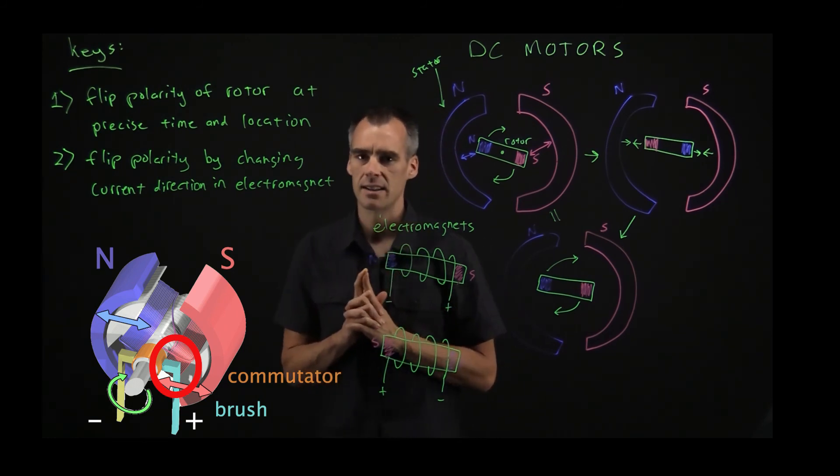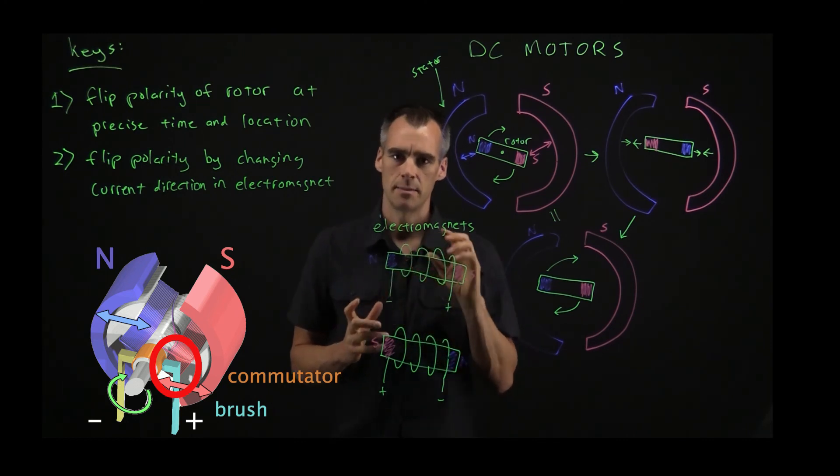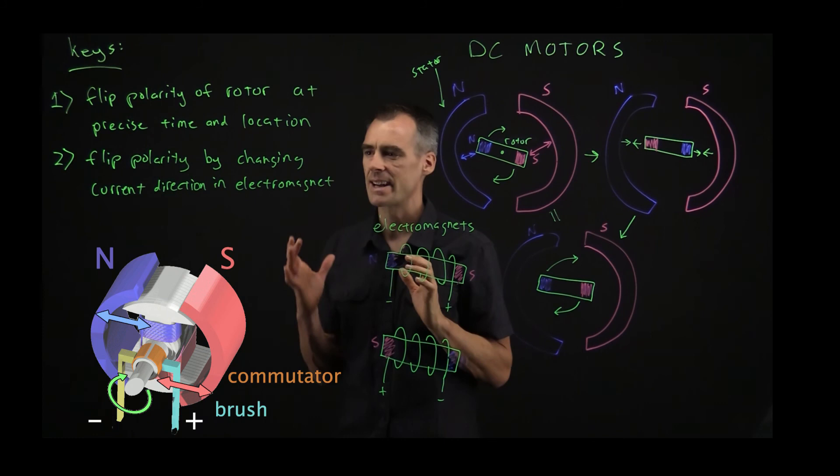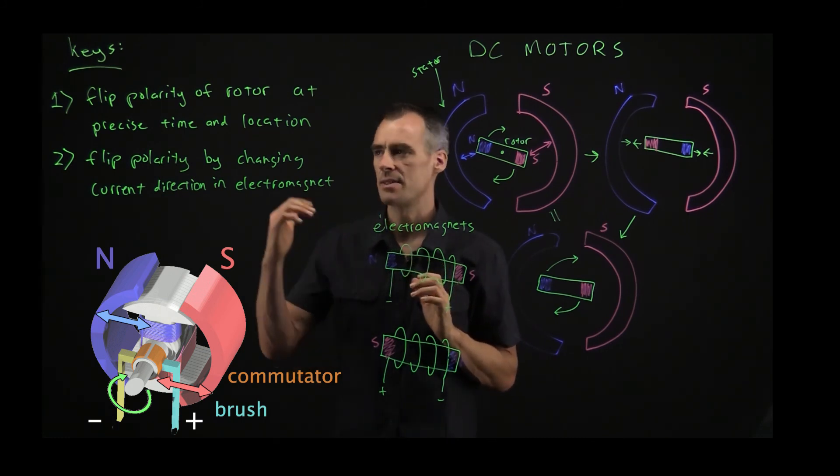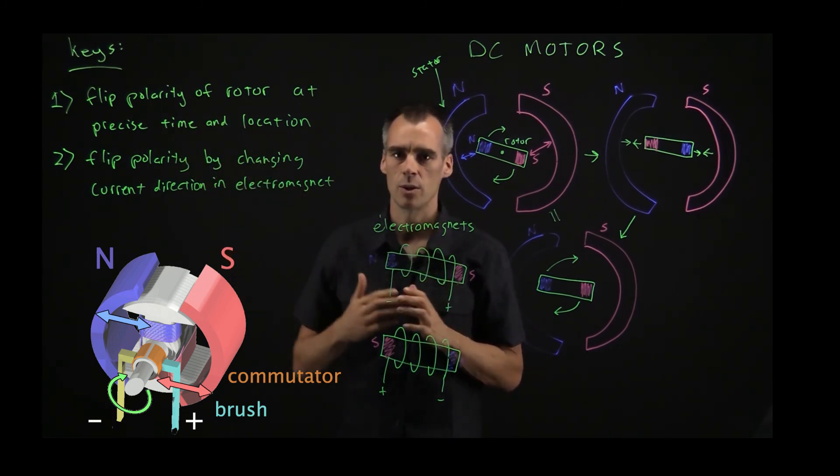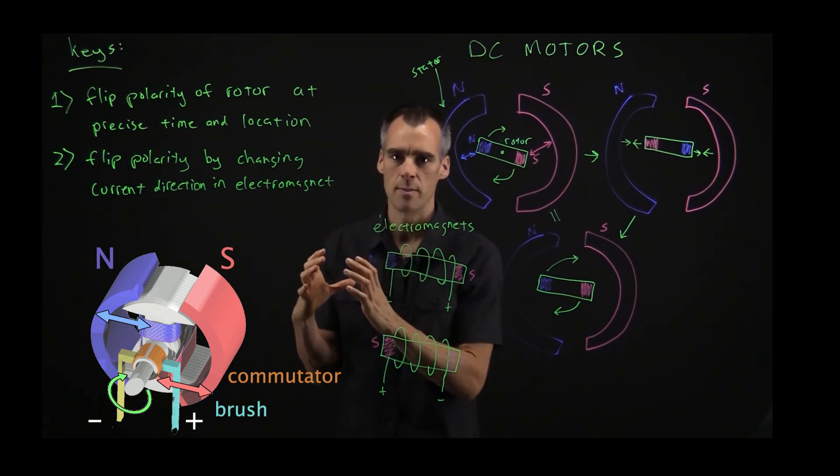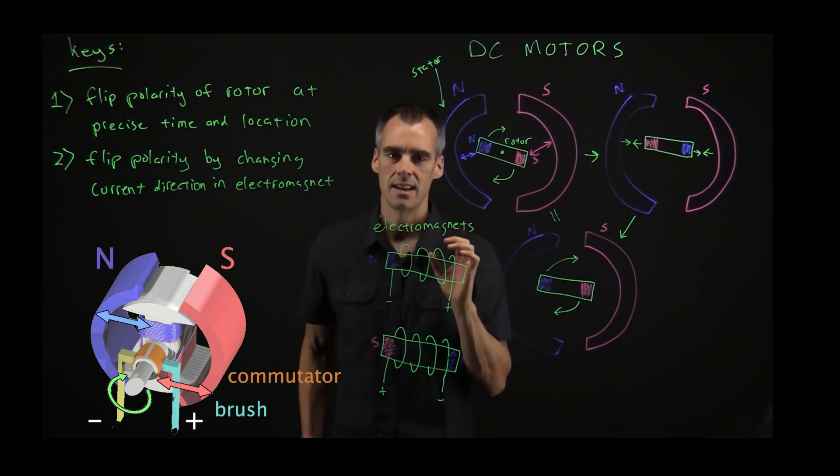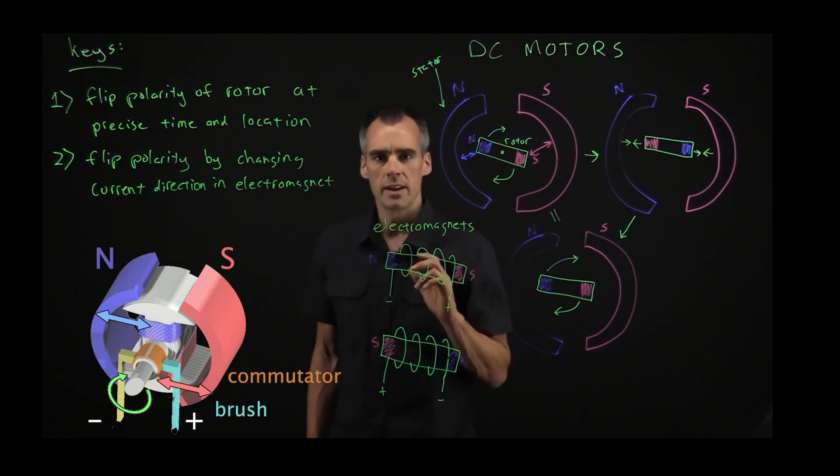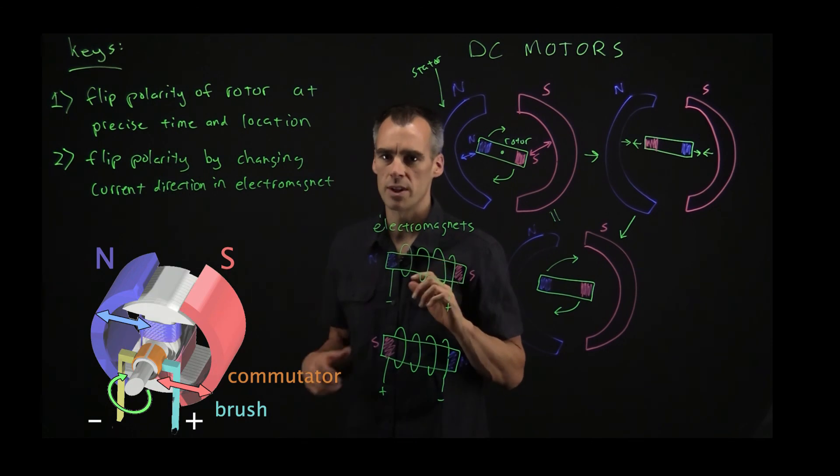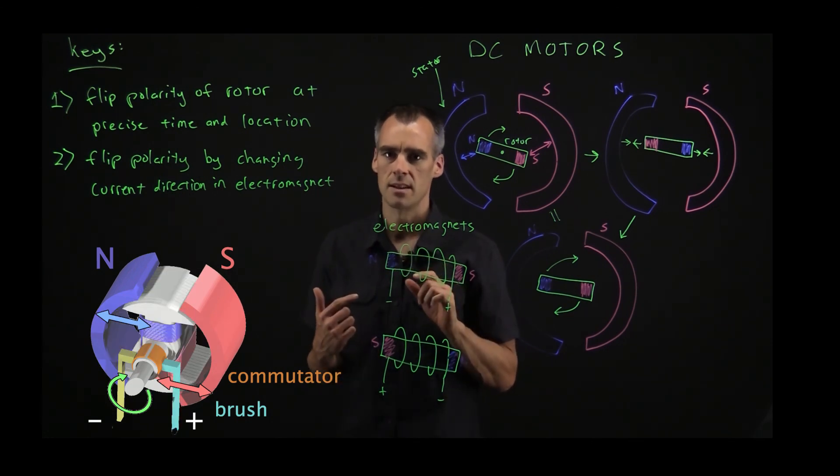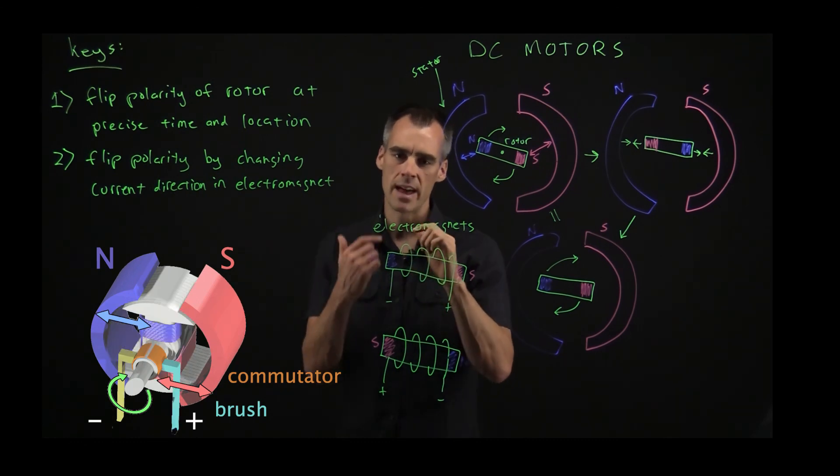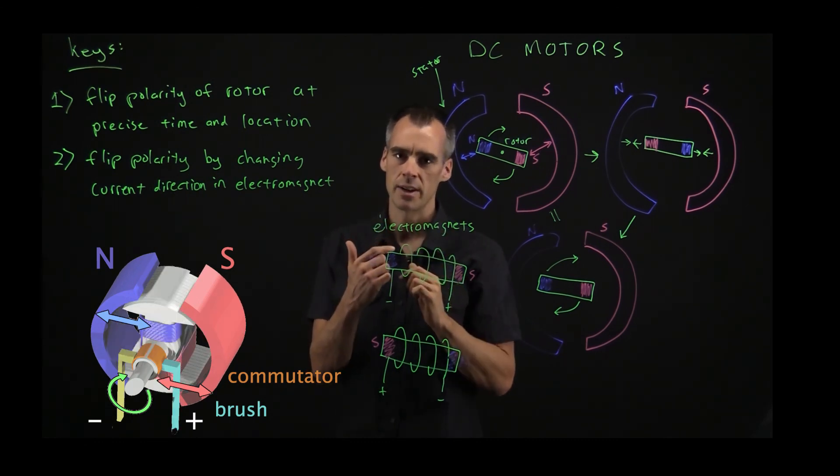And we're back to exactly where we started and it's going to keep rotating clockwise. So you see you don't actually need a complicated switch to get this perfect timing and precise location. It's kind of just built into the electromagnet so it just switches automatically as soon as it gets into that position. So running this through it a couple times you can see how the motor is going to keep turning clockwise as the polarity of the magnet keeps switching every time that rotor does a 180 degree or half turn.